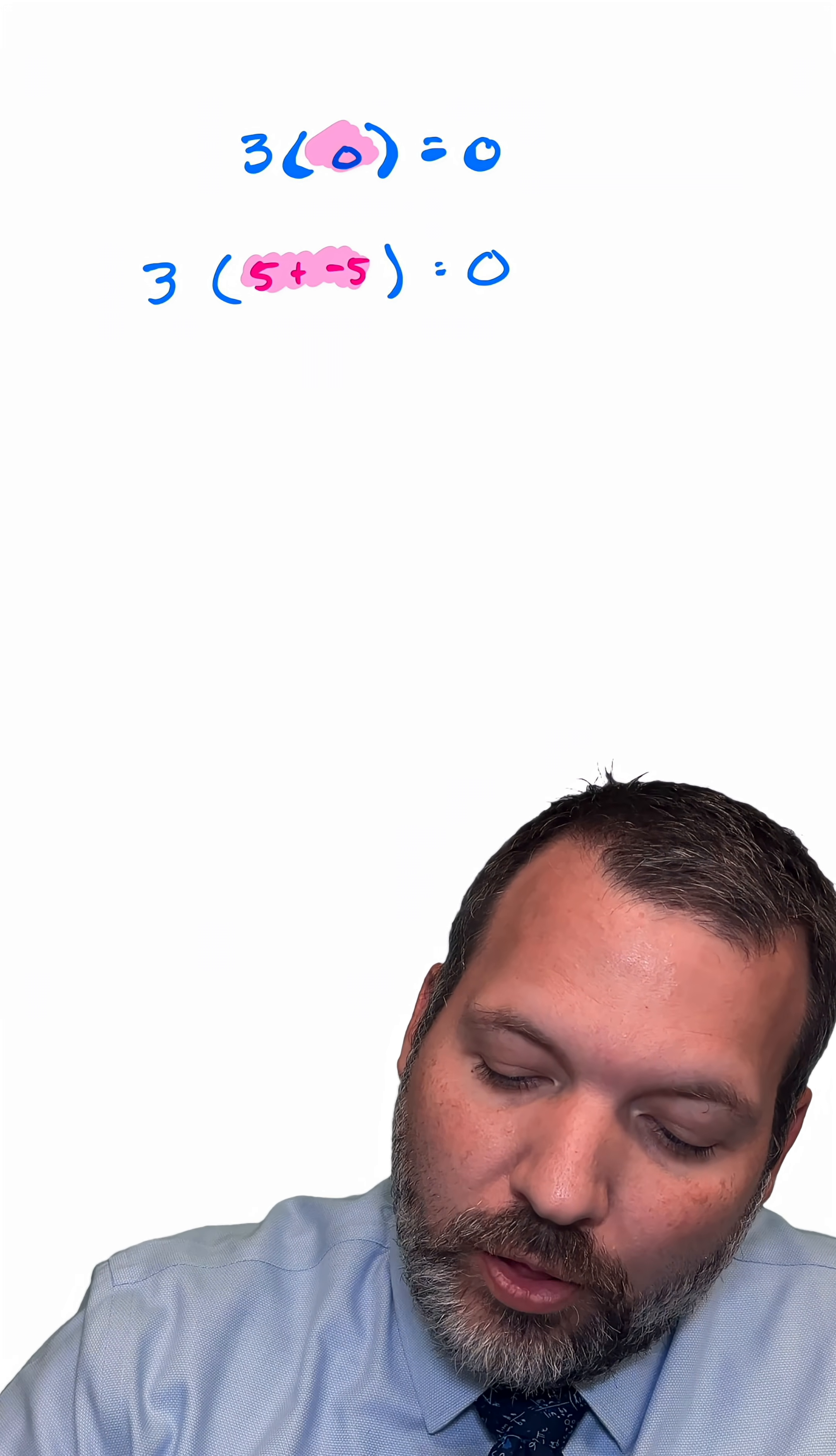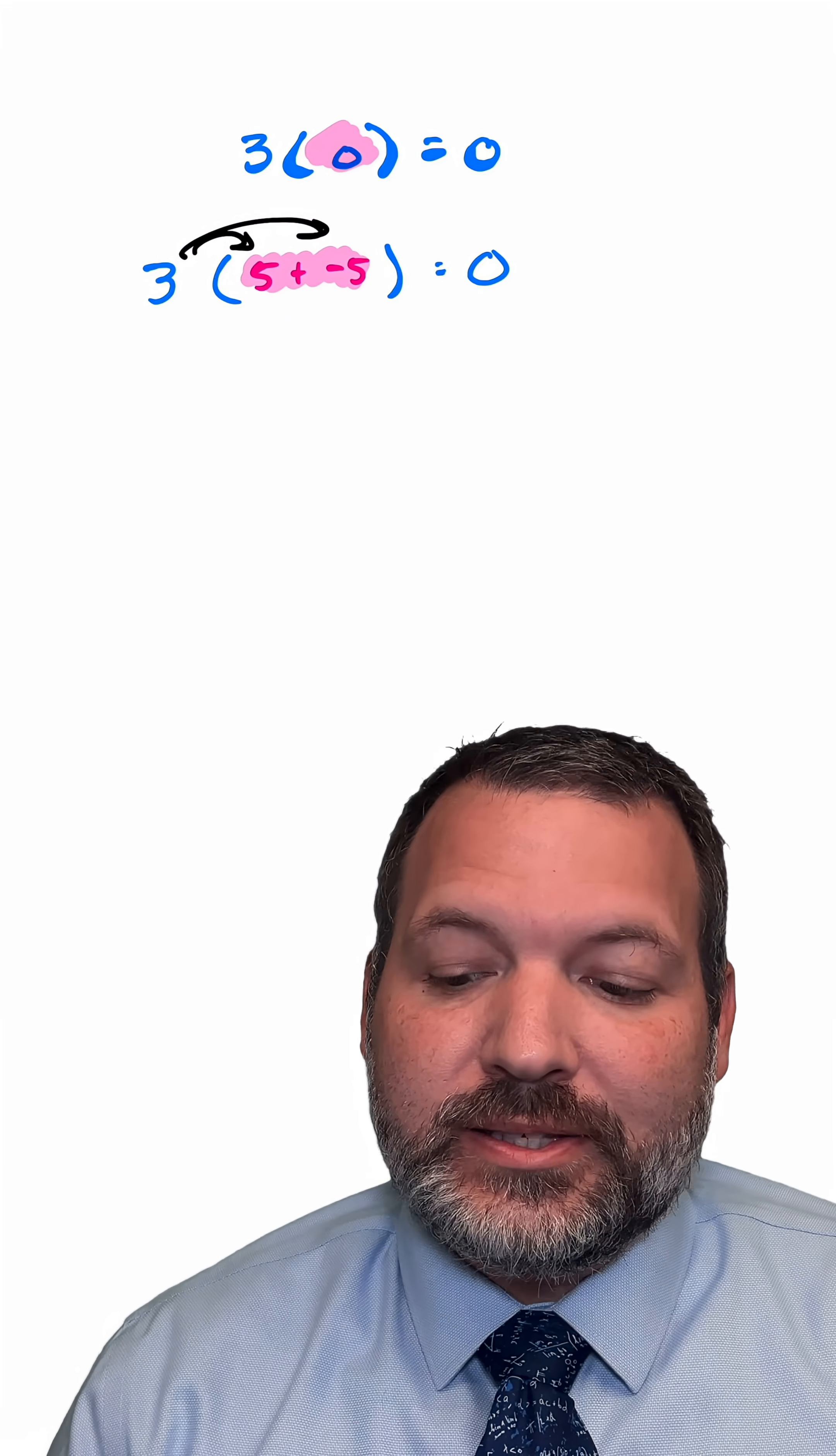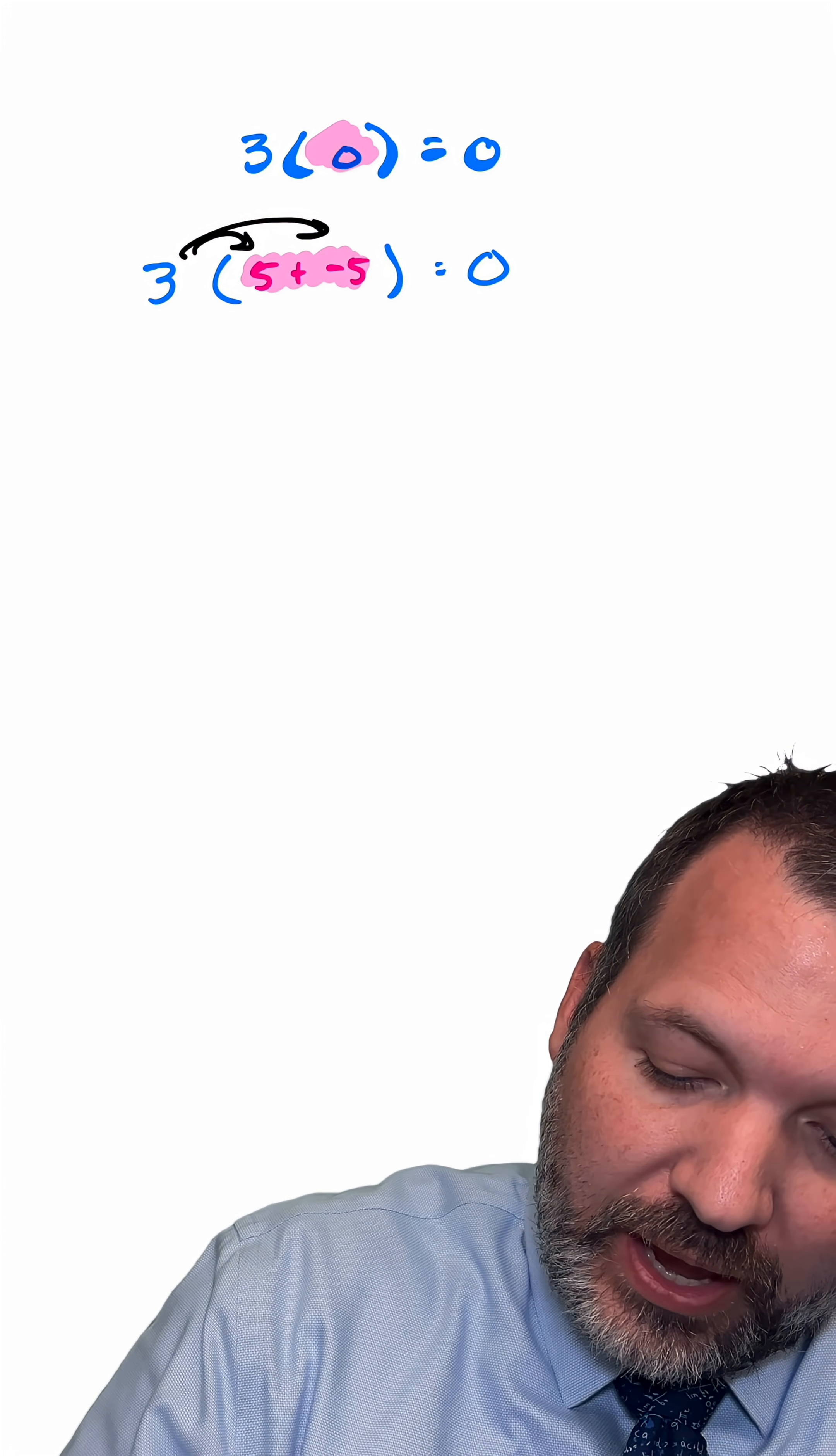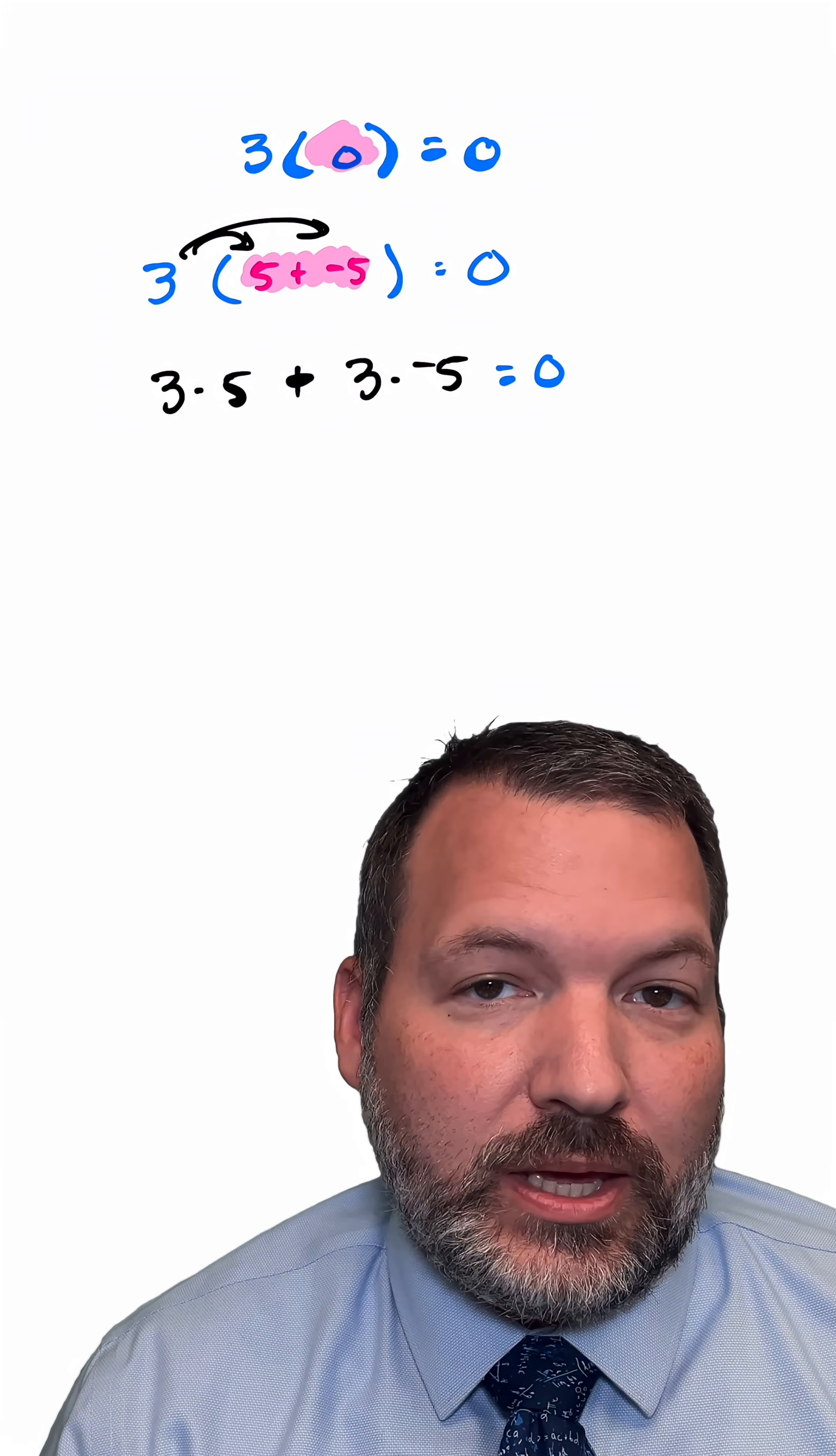From here, I'm going to use what we call the distributive property, or what I tell my students is the claw. Is that crazy? The distributive property here says that we can actually perform the multiplication before we perform the addition. So this has to be the same thing as 3 times 5 plus 3 times negative 5. But again, the distributive property doesn't change any values, so this should still be equal to 0.